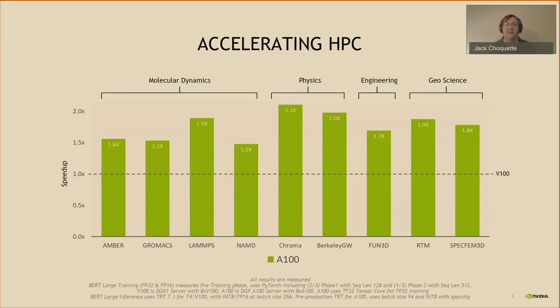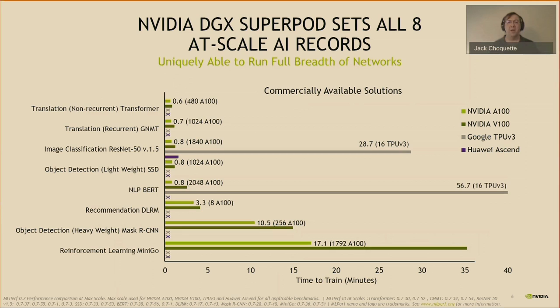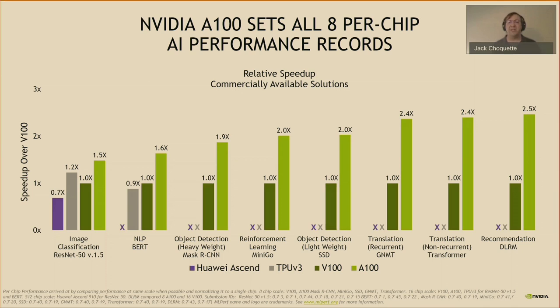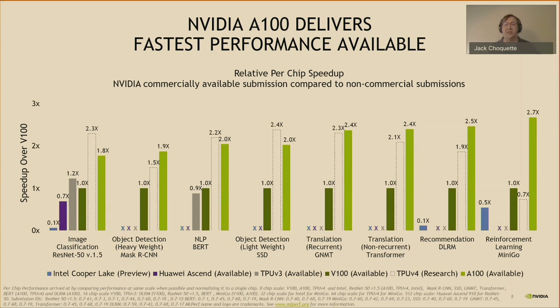In the NVIDIA Ampere architecture, for the first time we bring TensorCore acceleration to HPC with IEEE-compliant support for FP64 matrix multiply operations. For DL workloads, NVIDIA SuperPODs with A100 have set records for ML benchmark, handily beating all other commercially available systems including Google's TPU V3 and Huawei's Ascend systems. A100 also dominates in per-chip performance, setting MLPerf records. Even including not-yet-commercially-available systems like Intel's upcoming Cooper Lake CPU and Google's TPU V4 research chip, A100 has industry-leading performance.